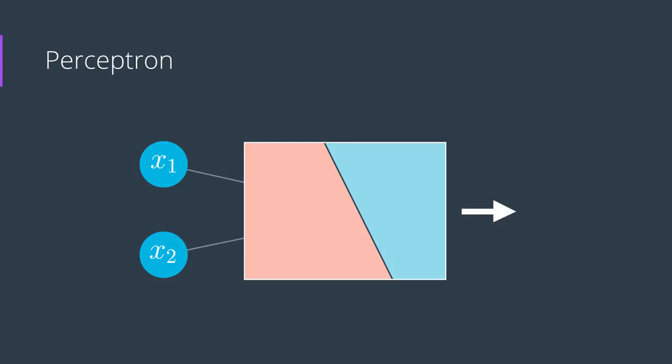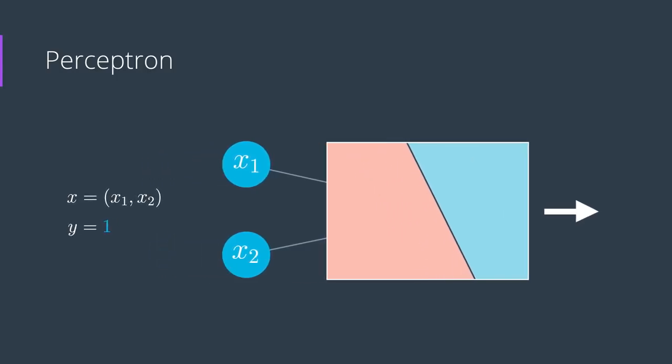So let's look at our simplest neural network, a perceptron. This perceptron has a data point of the form x1, x2, where the label is y equals 1.